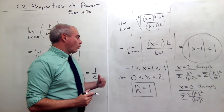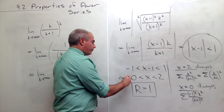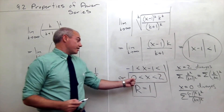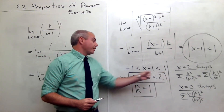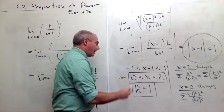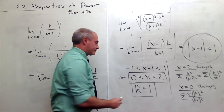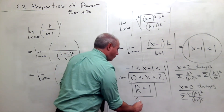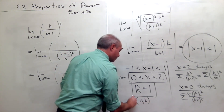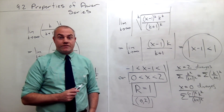So what is my interval of convergence? The series diverges when x equals 0 and diverges when x equals 2. My interval of convergence is 0 to 2, not including either endpoint. You could write your interval as open parenthesis 0 to 2, close parenthesis. Either way, it's just fine.